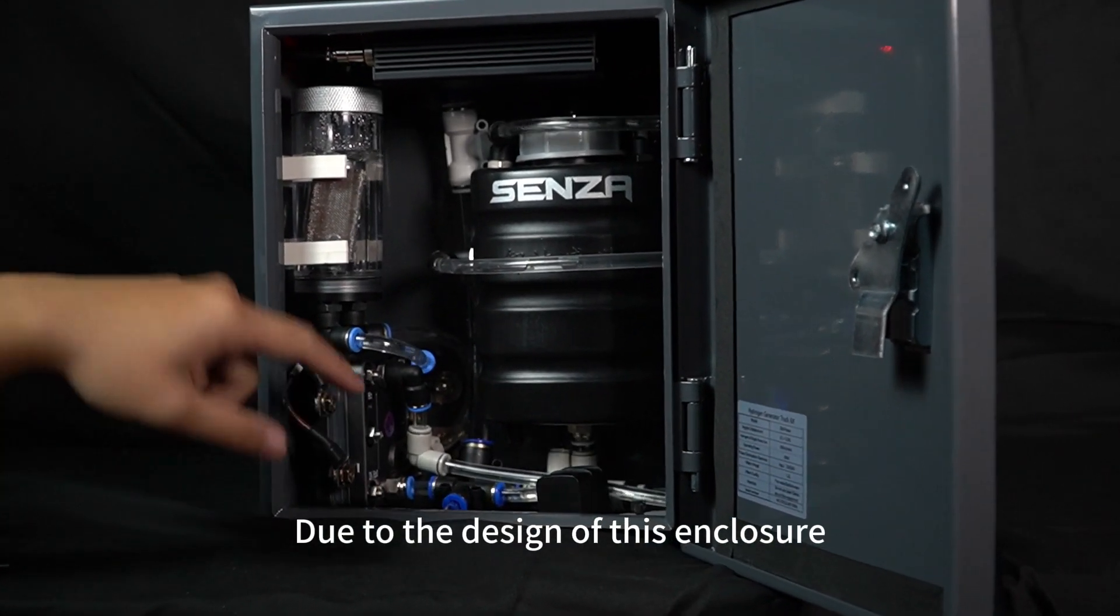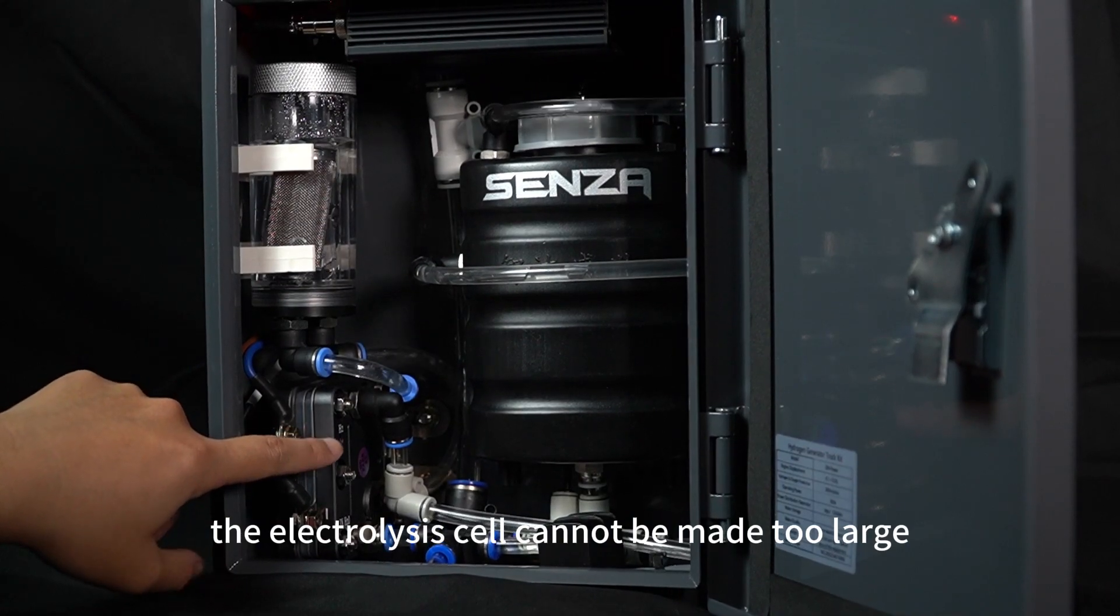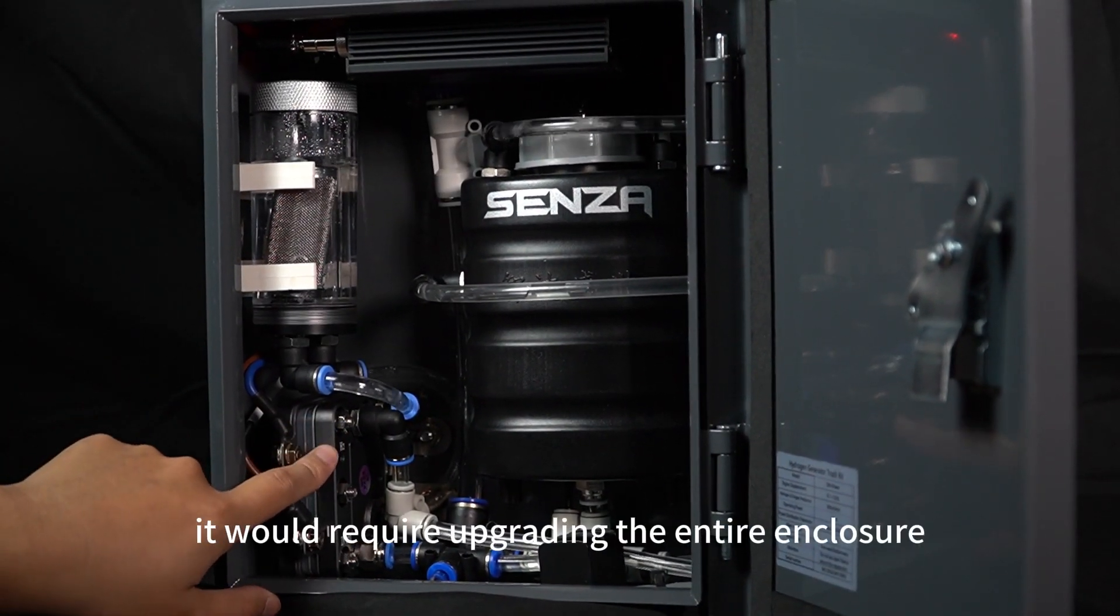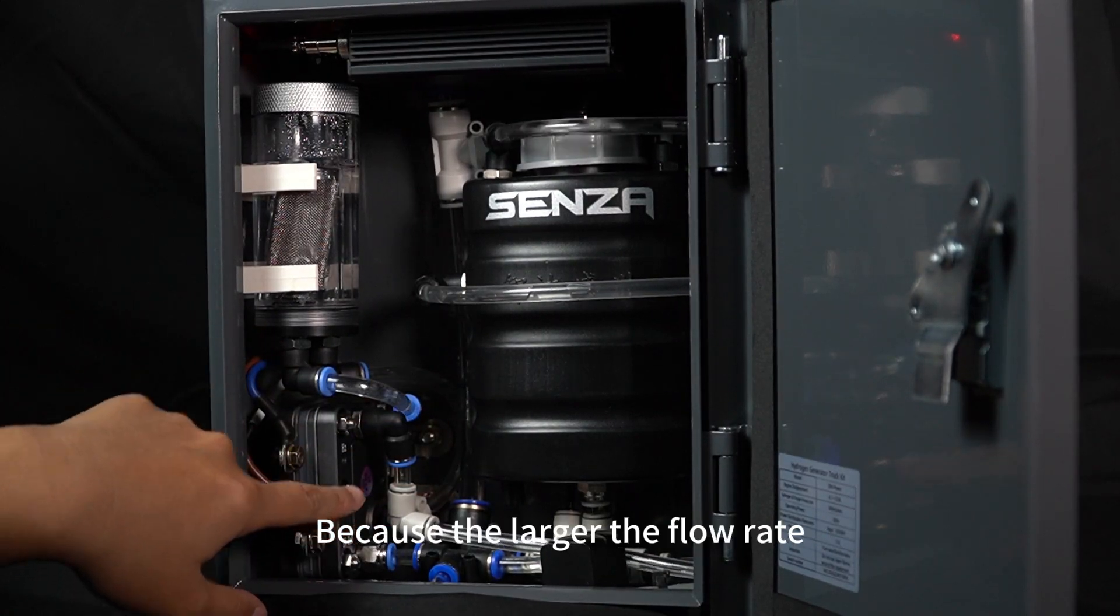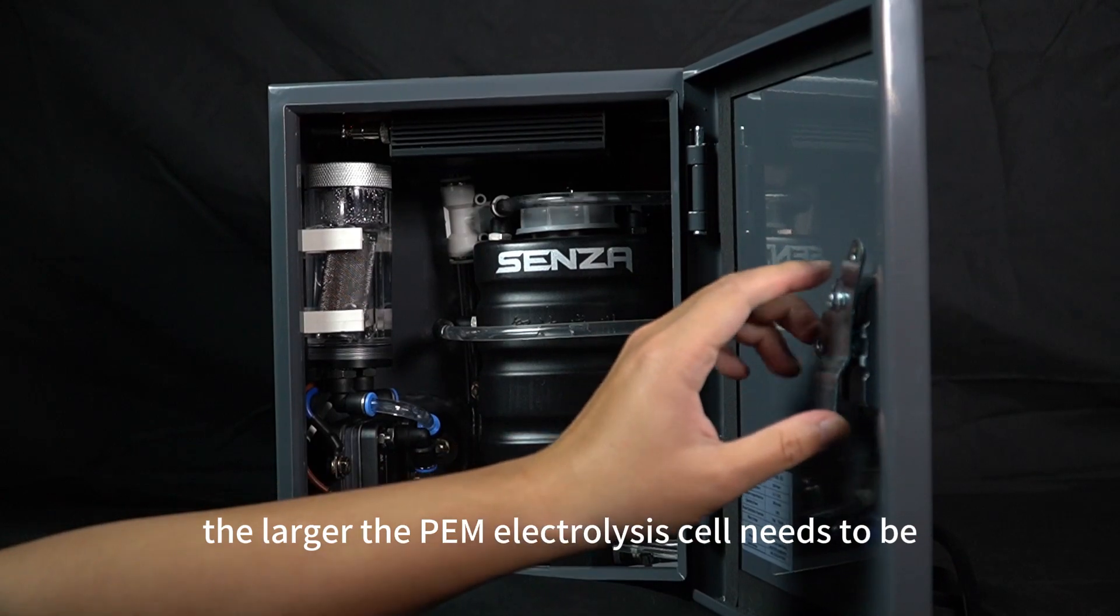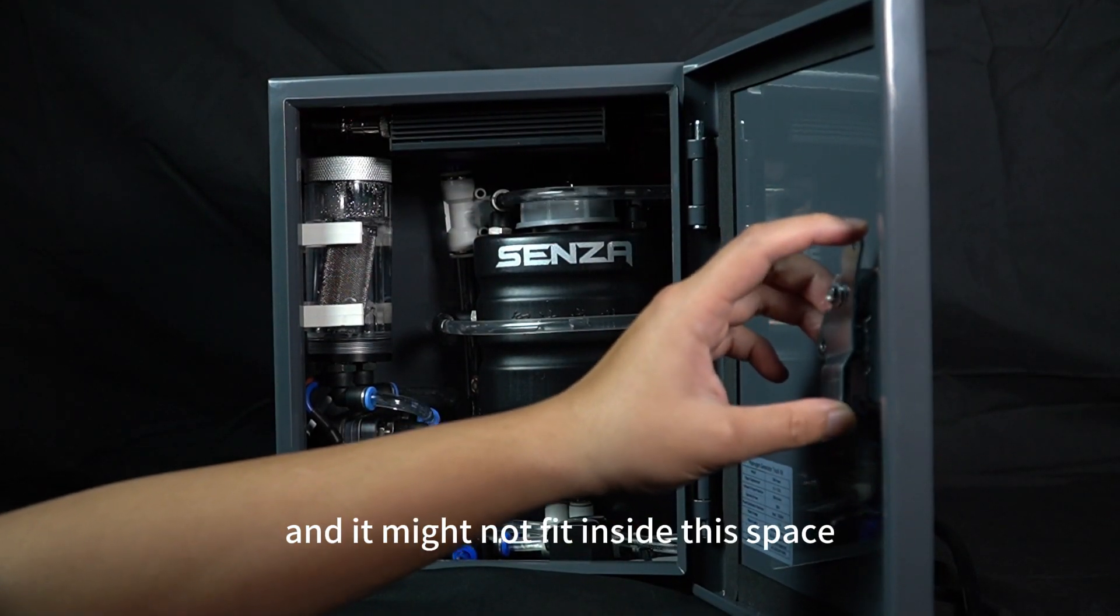Due to the design of this enclosure, the electrolysis cell cannot be made too large. If you need a larger flow rate, it would require upgrading the entire enclosure. Because the larger the flow rate, the larger the PEM electrolysis cell needs to be, and it might not fit inside this space.